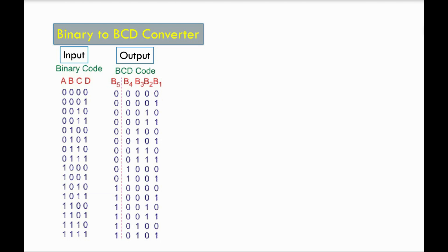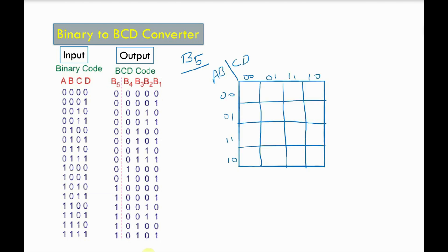First, we will find the expression for b5. Since the inputs are 4 variables, we will use a Kmap to find b5. This is a 4-variable Kmap. Clearly, we can see b5 is 1 only on these conditions. That means when the input is 1010 — when a is 1, b is 0, c is 1 and d is 0 — the corresponding cell is mapped here. Similarly, all these cases have the output of b5 as 1.